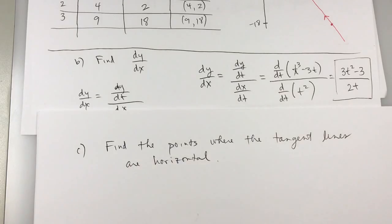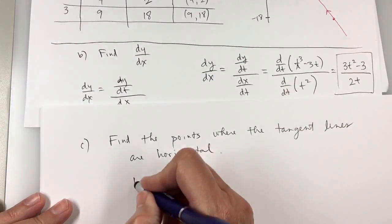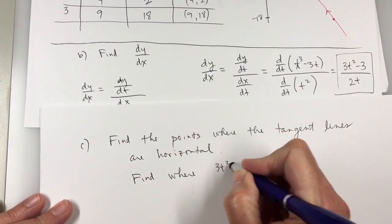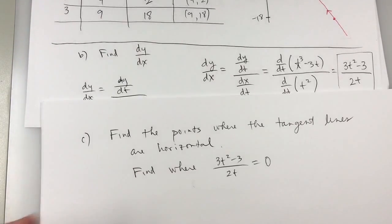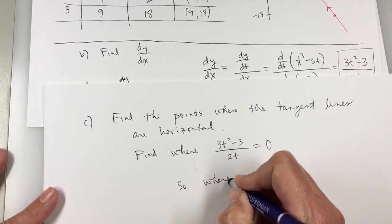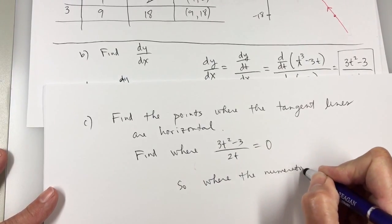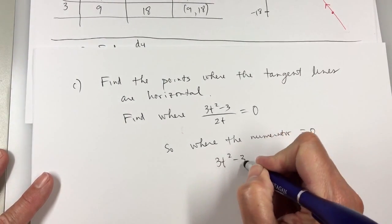So I'll take my derivative. The derivative is the slope. So I'll take the derivative. Find where 3t squared minus 3 over 2t equals 0. So that's a fraction equal to 0. So really, what do I need to figure if the fraction is equal to 0? Where the numerator is 0. So that's going to be 3t squared minus 3 is 0.